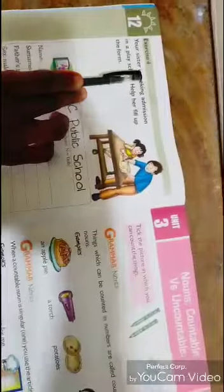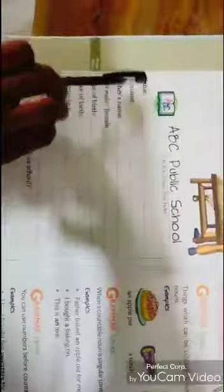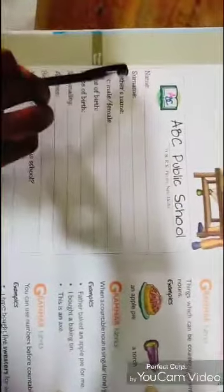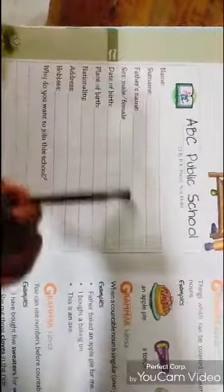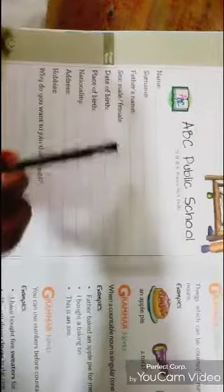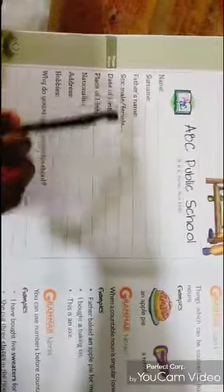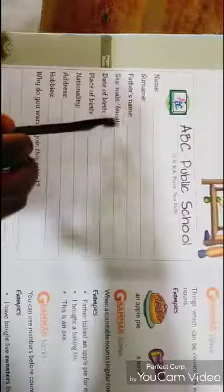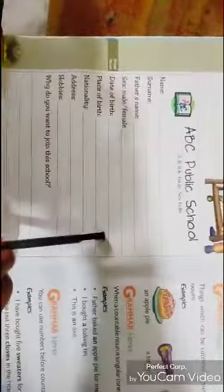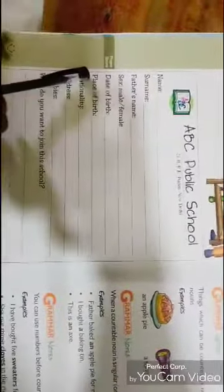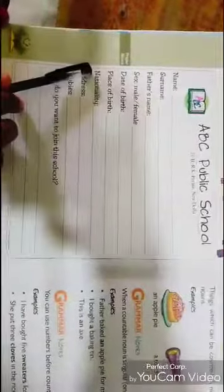Exercise 4. Your sister is seeking admission in a play school. Help her fill up the form. You have to write the form to fill up. First, name you have to write. Second, your name. Third, your father's name. Next, your sex - boy or girl. Date of birth. Next, the place of birth.